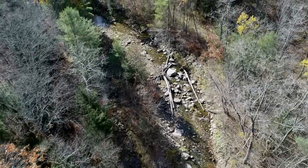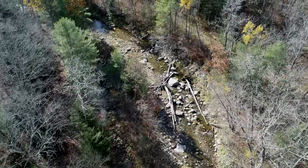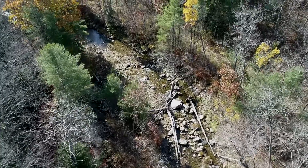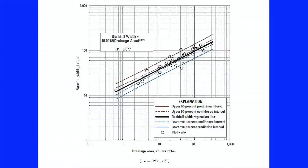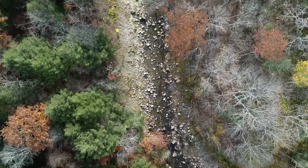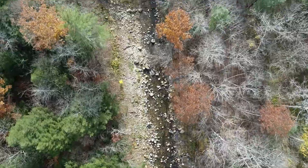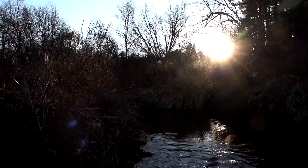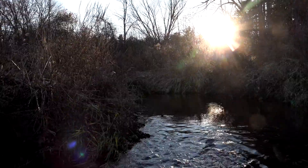It's always good to cross-check our bankful dimensions with what are referred to as bankful regional curves, which plot watershed area versus the bankful dimensions. These are useful to help confirm your field-identified bankful features. It's critical to understand the stream type a project may be on so you have a suitable reference in that same stream type.